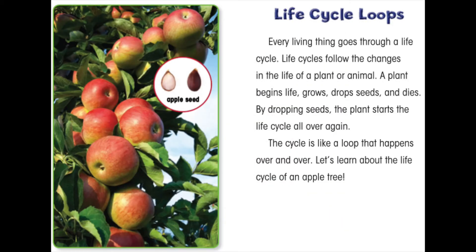Every living thing goes through a life cycle. Life cycles follow the changes in the life of a plant or animal. A plant begins life, grows, drops seeds, and dies. By dropping seeds the plant starts the life cycle all over again. The life cycle is like a loop that happens over and over. Let's learn about the life cycle of an apple tree.